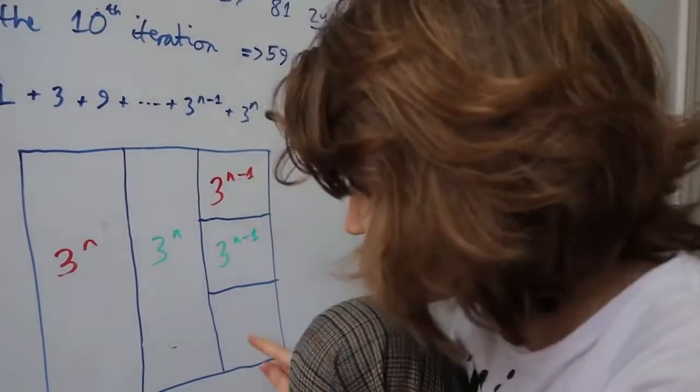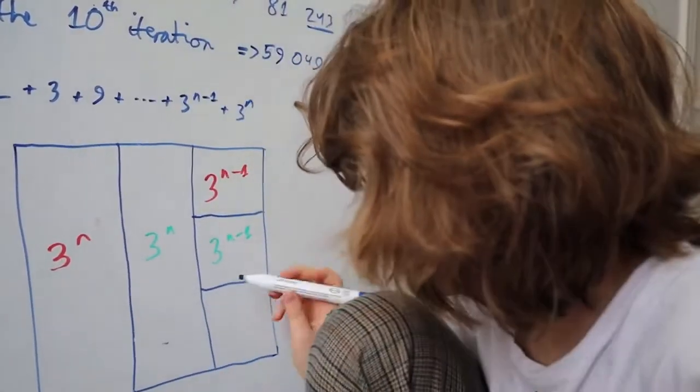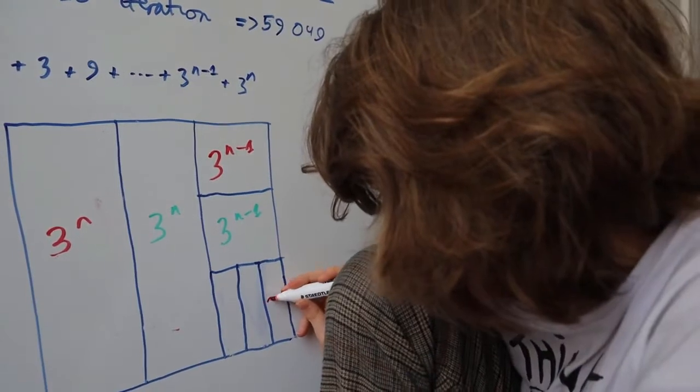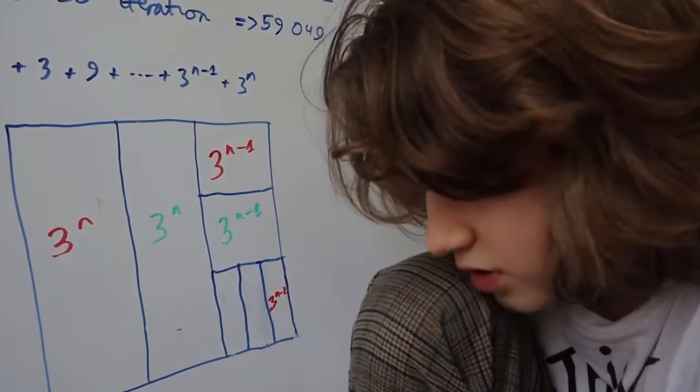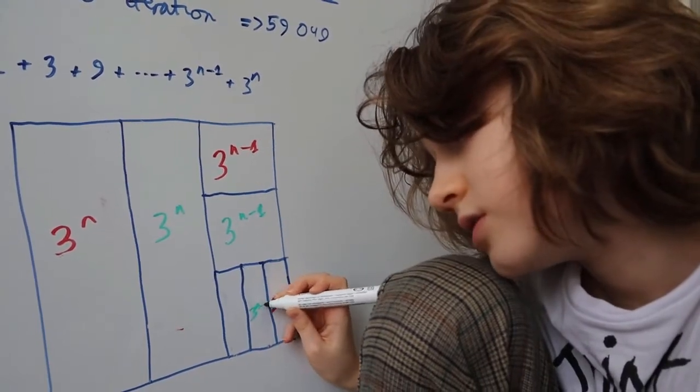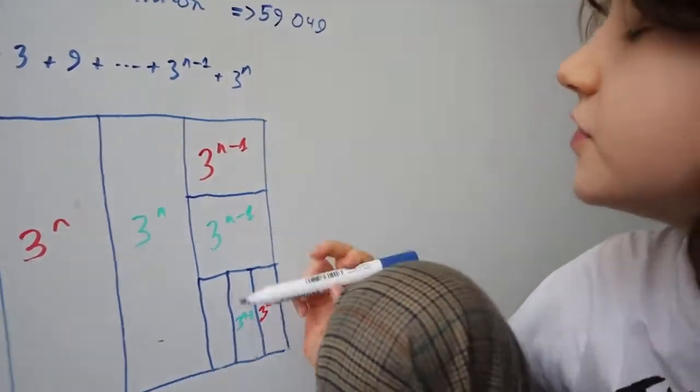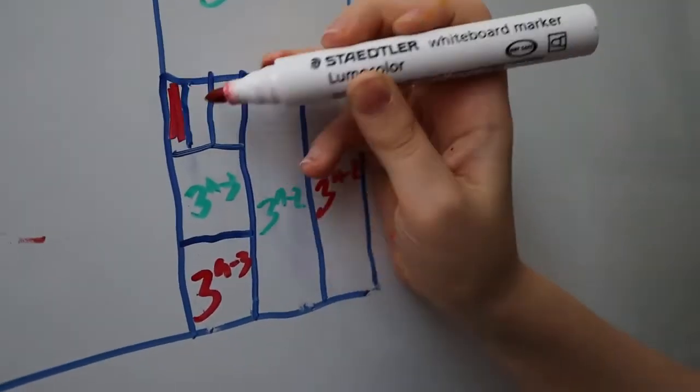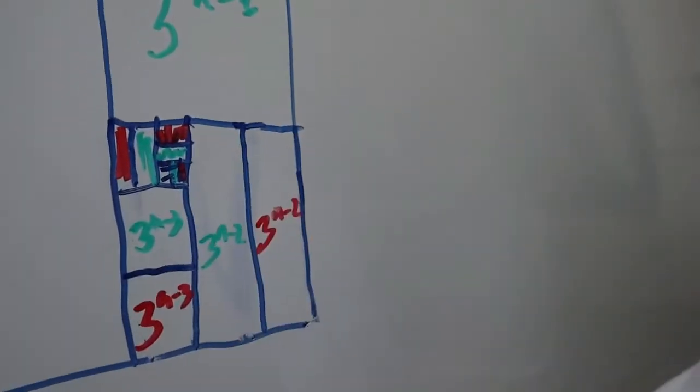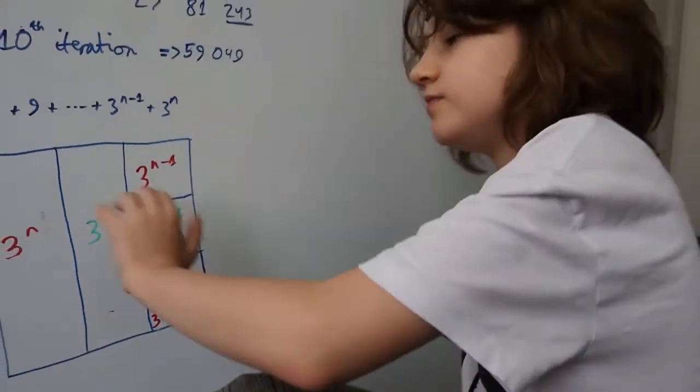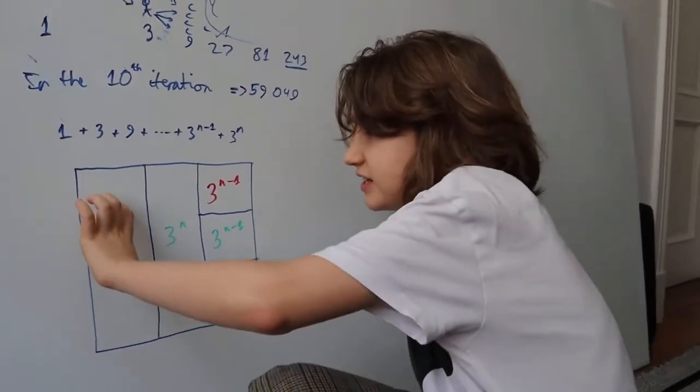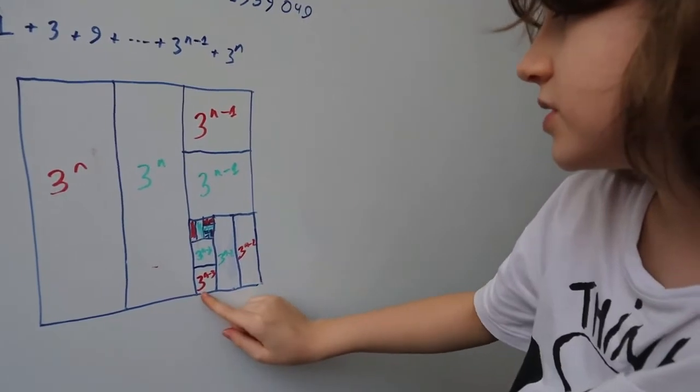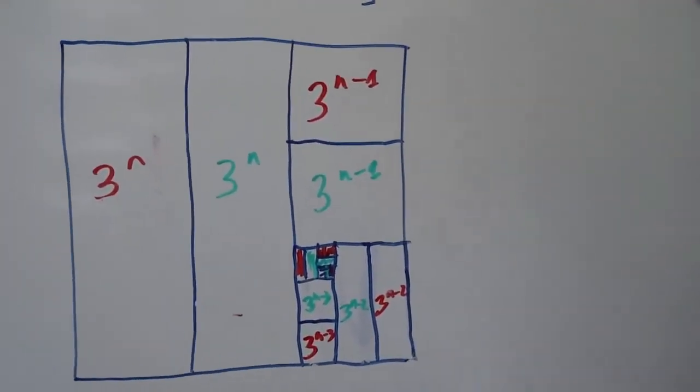You can apply a similar equation that each of these sections is going to be 3 to the n minus 1. I guess you can see where this is going. The last one I'm not going to write out. Instead, I'm going to chop it up. This is now 3 to the n minus 2. Chop, chop. And so on.